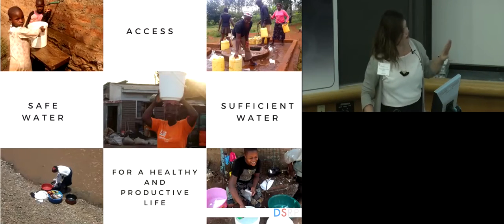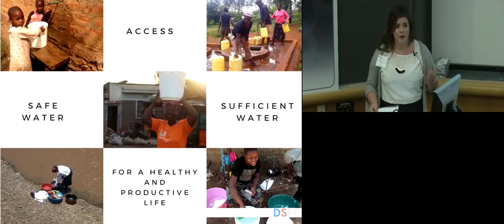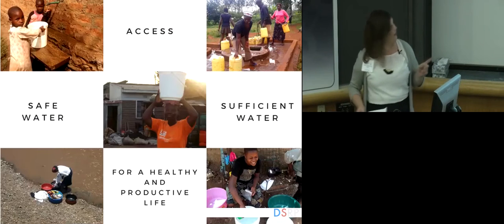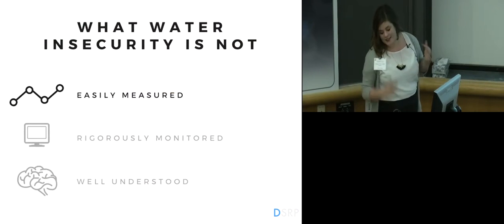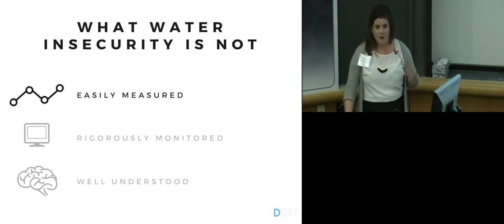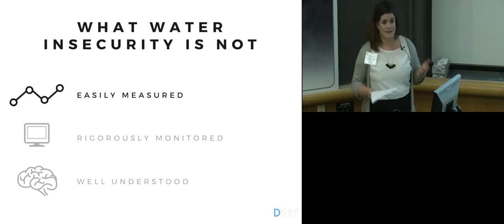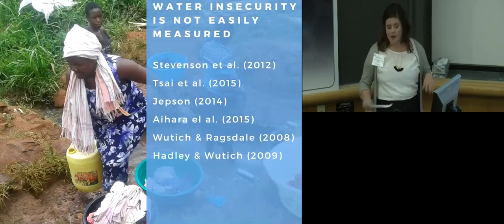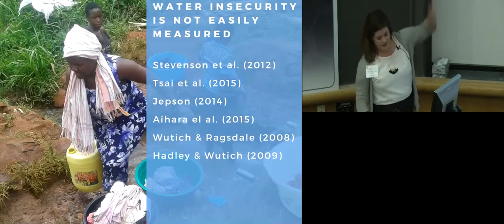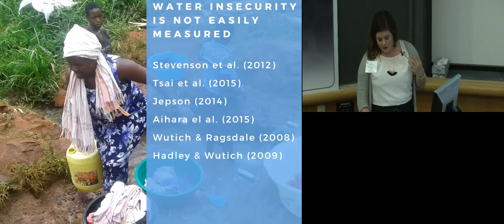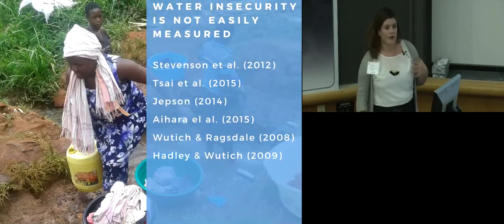All of these are necessary for a healthy and productive life. We also know that water insecurity is a wicked problem. But first, let's talk about what water insecurity is not. Water insecurity is not easily measured. While there are numerous scales to quantify water insecurity, there is no one universally agreed-upon metric by which we can quantify just how water-insecure households are, or begin to solve the problem.